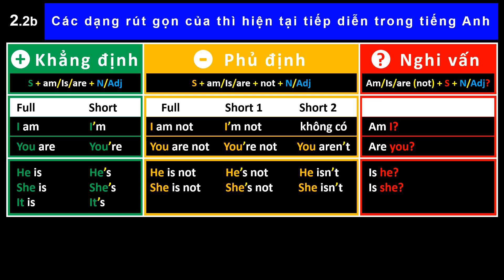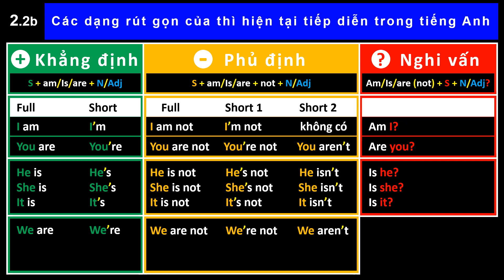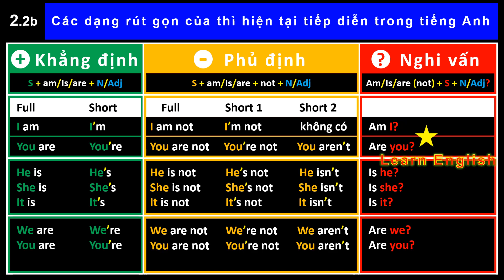It is → It's. It is not → It's not. Is it? We are → We're. We are not → We're not. Are we? They are → They're. They are not → They're not. Are they?